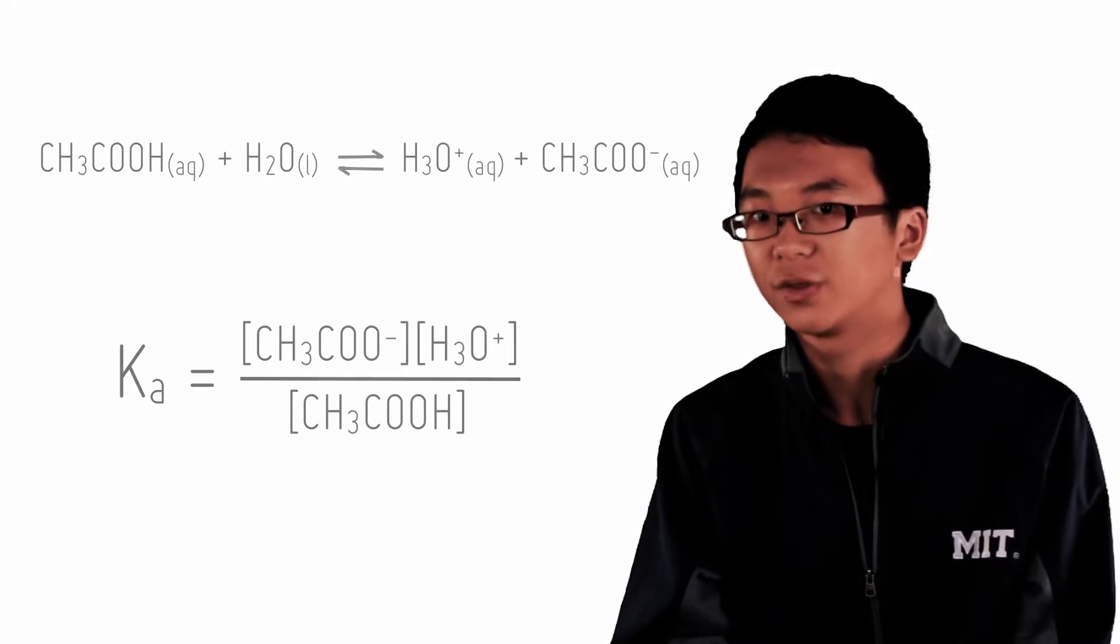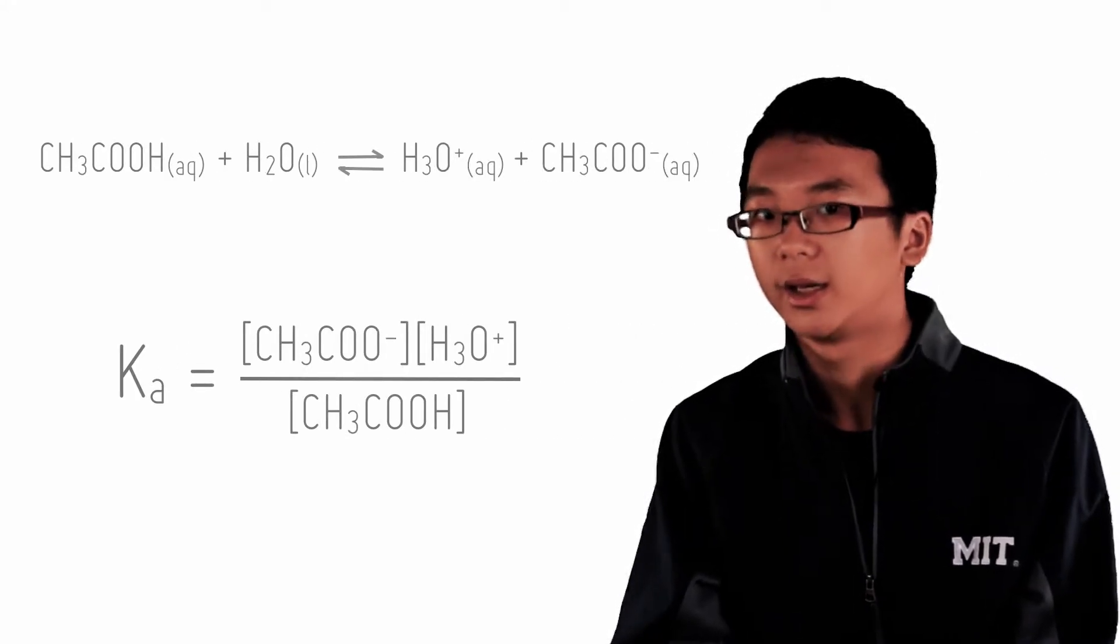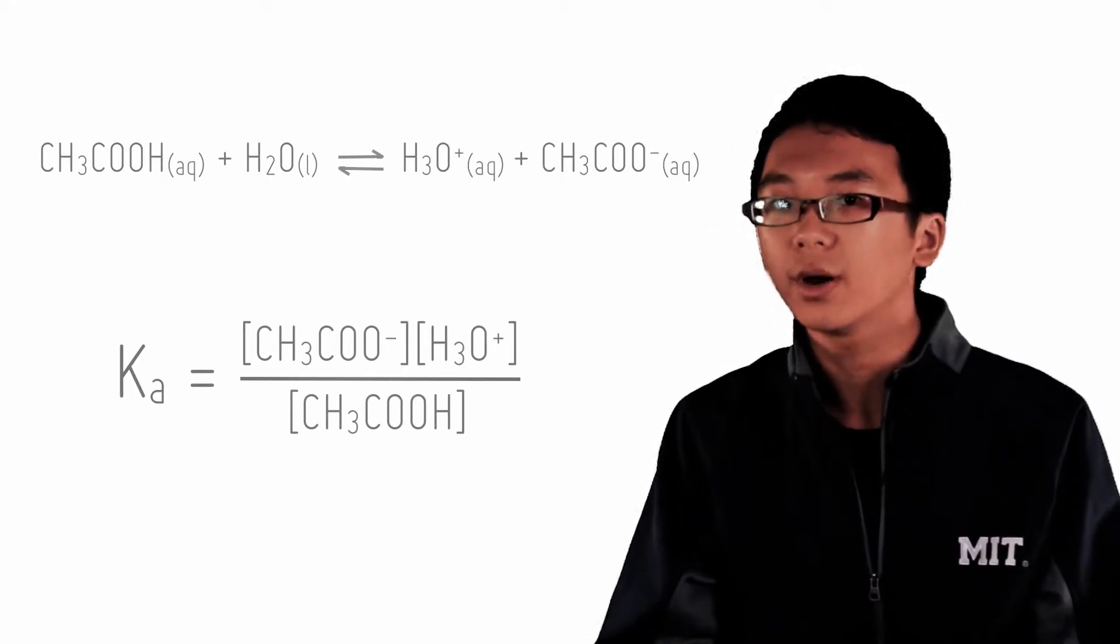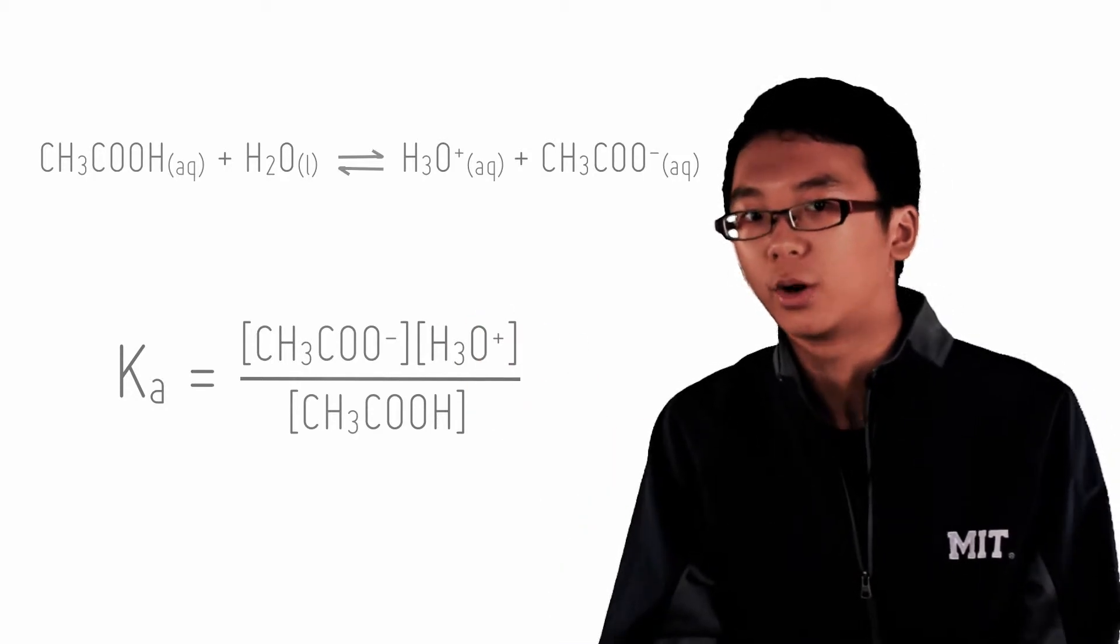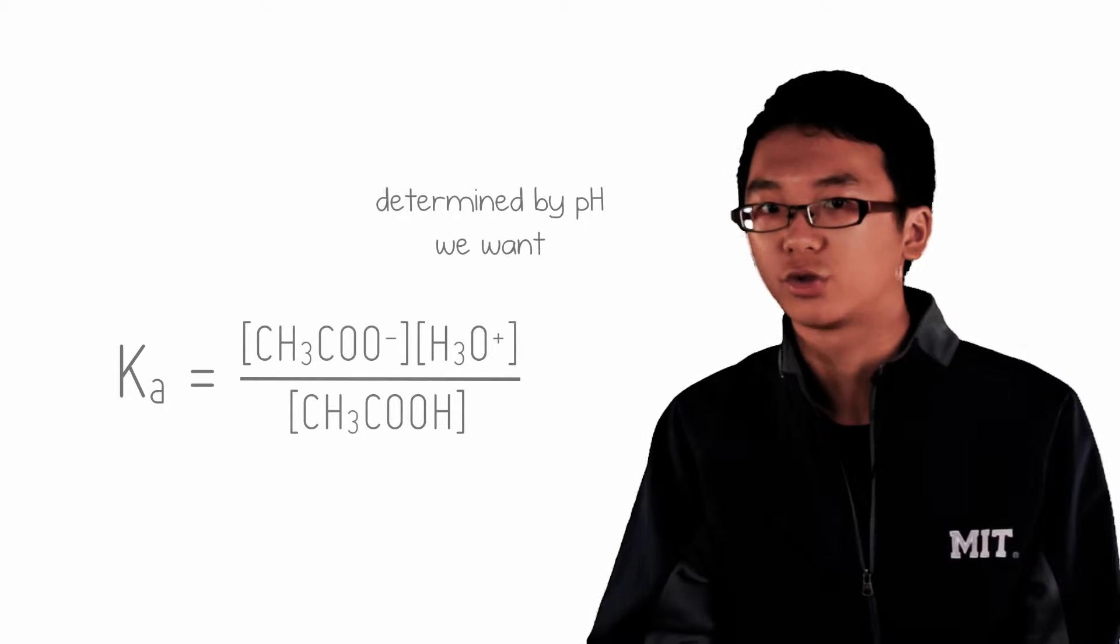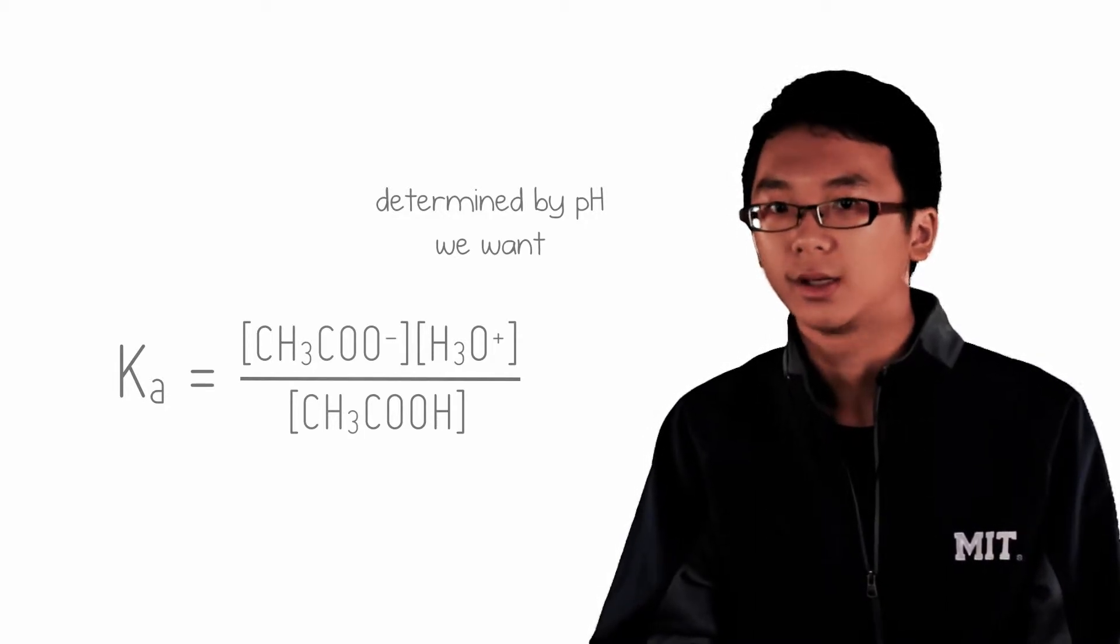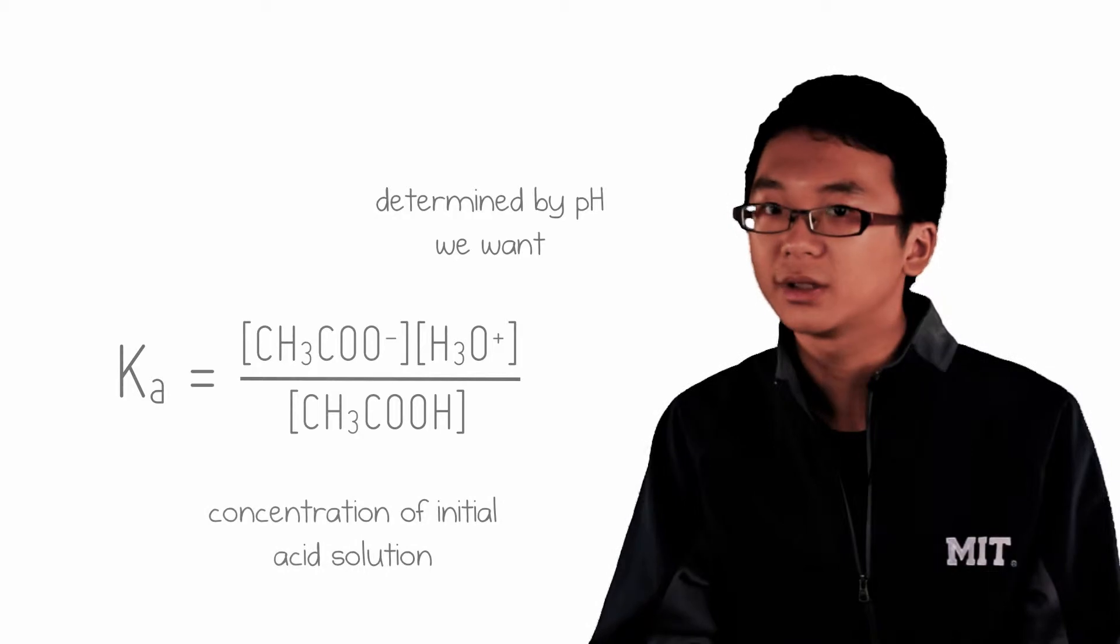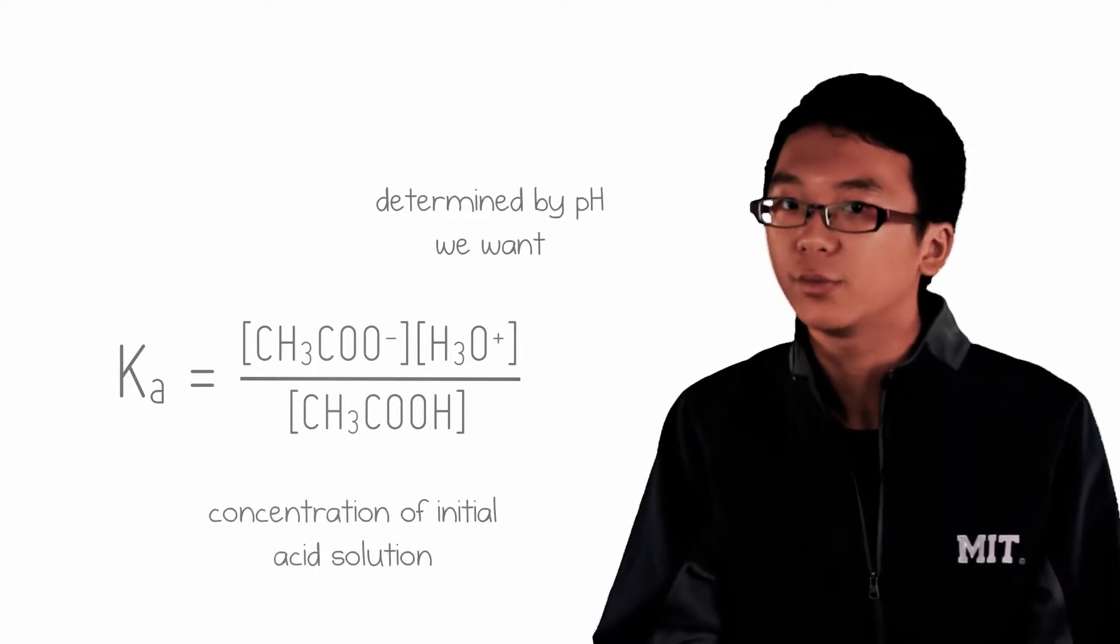Let's look at the equilibrium expression for acid dissociation Ka. Ka is given by, for example, ethanoate multiplied by hydronium over ethanoic acid. The pH that we want directly determines the concentration of hydronium ions. The concentration of acid depends on the molarity of the acidic solution we start with.